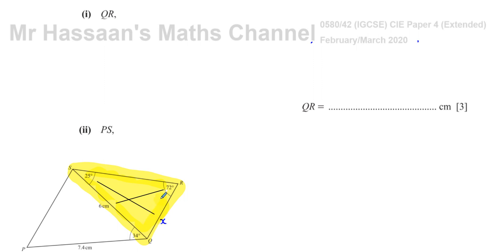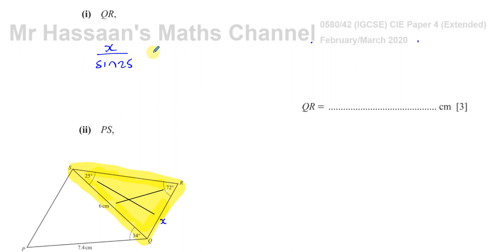So 6 divided by sine 72 will give the same ratio as X divided by sine 25. Using that relationship, we can find missing lengths and angles in non-right-angle triangles. We can't use sine equals opposite over hypotenuse or cosine equals adjacent over hypotenuse — we can't use SOHCAHTOA — but we can use the sine rule. As we're trying to find a side, I'll use the ratio with the side on the numerator: X over sine 25 equals 6 over sine 72.